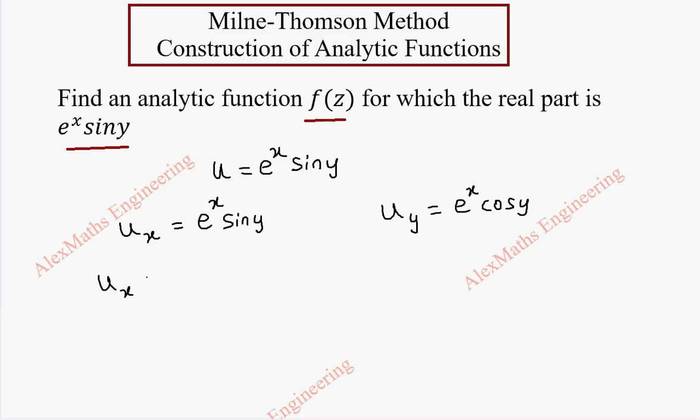Now we're going to find u_x(z,0). Wherever x is, we substitute z, and wherever y is, we substitute 0. So sin 0 is 0, and this entire term is 0.